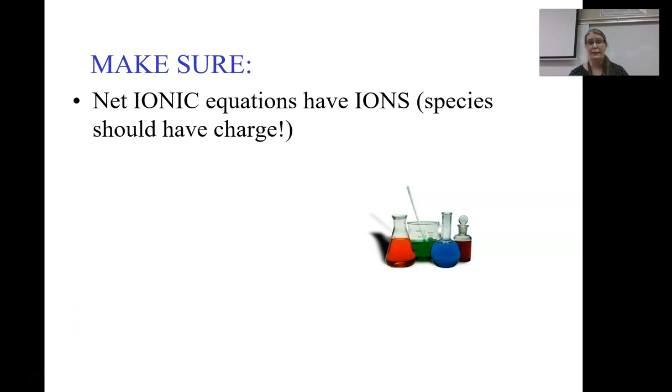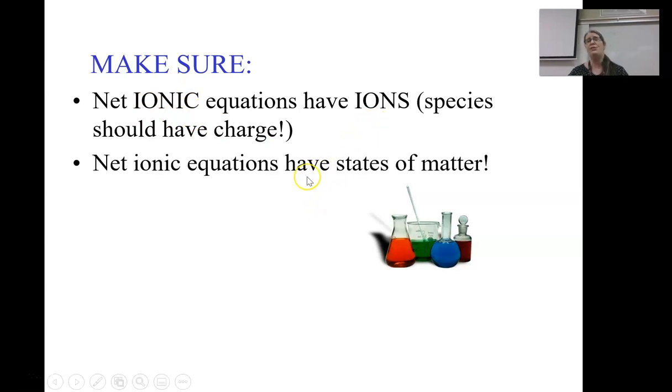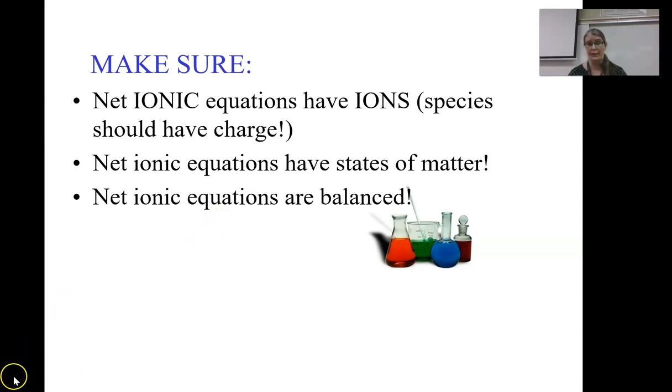Here are our quick things we need to make sure of when we write net ionic equations. Net ionic equations have ions in them. If there are no species with charge, then you are doing something wrong. It has the word ionic in it. Make sure that there are ions and the ions have the correct charges. Net ionic equations absolutely must have the state of matter. If I don't put the solid on my precipitate or the liquid on my water, how am I even justifying that there was a chemical change? Net ionic equations also, like all chemical equations, must be balanced. You have to pay attention to the ratios in your formulas and make sure that they work out. And those are the three biggest things we really have to look for when we write net ionic equations. They should have charges, they always have states of matter, and they always need to balance.